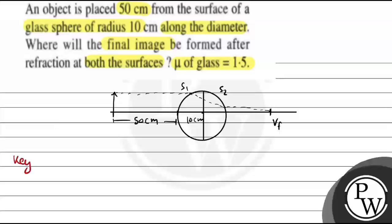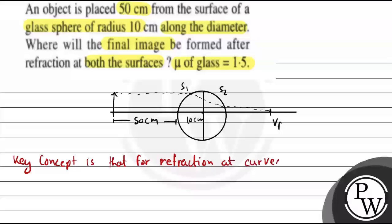For refraction at a curved surface, we have the formula: (mu2 minus mu1) divided by capital R equals minus mu1 over u plus mu2 over v.